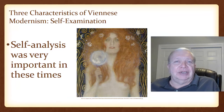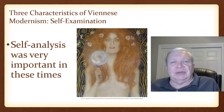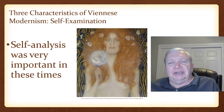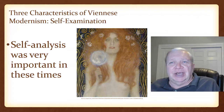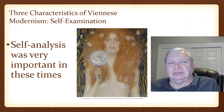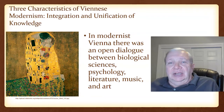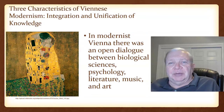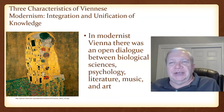In terms of characteristics of Viennese Modernism, self-analysis was very important. In fact, a keystone of psychoanalysis is that a psychoanalyst has to be analyzed before they can analyze other people. To recap: in Modernist Vienna, there was an open dialogue between the biological sciences, psychology, literature, and art. It must have been a fascinating intellectual environment.